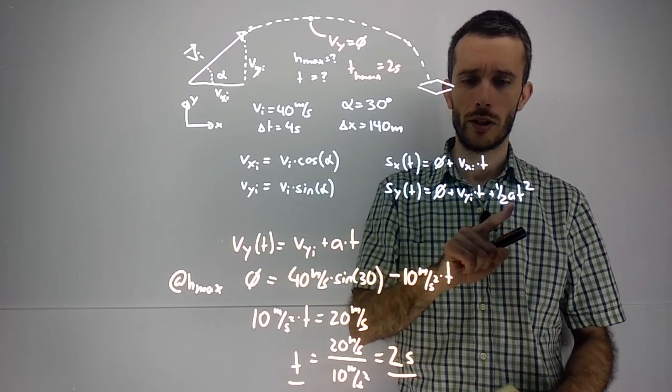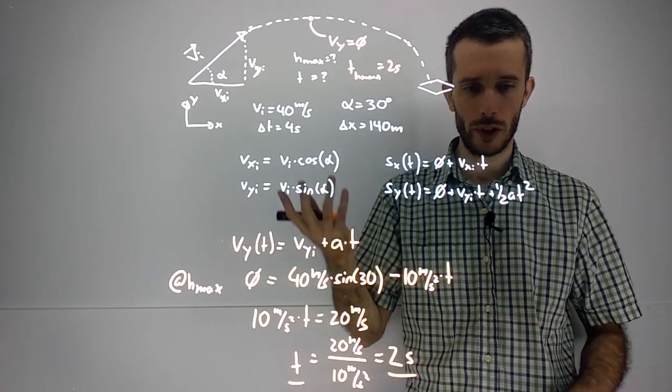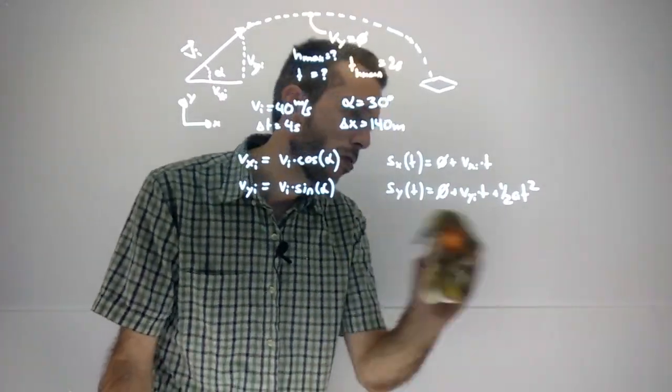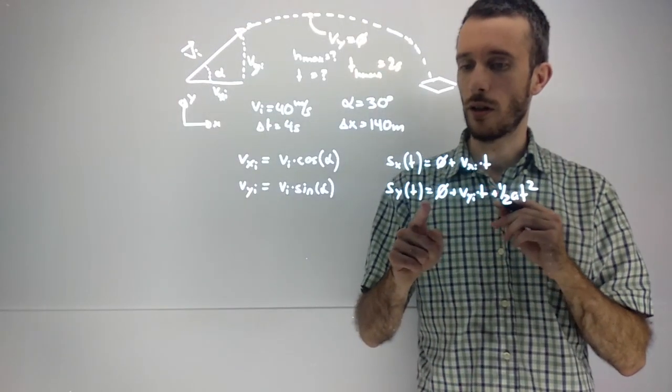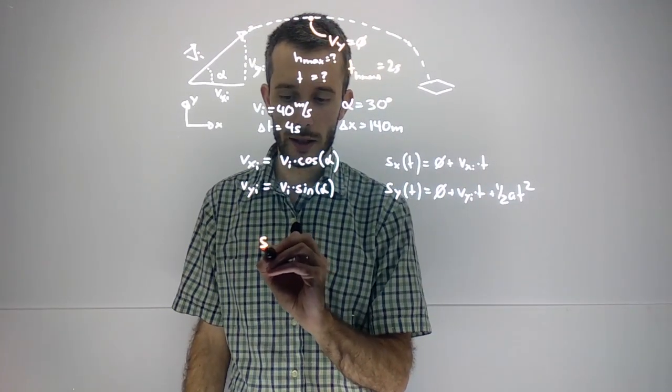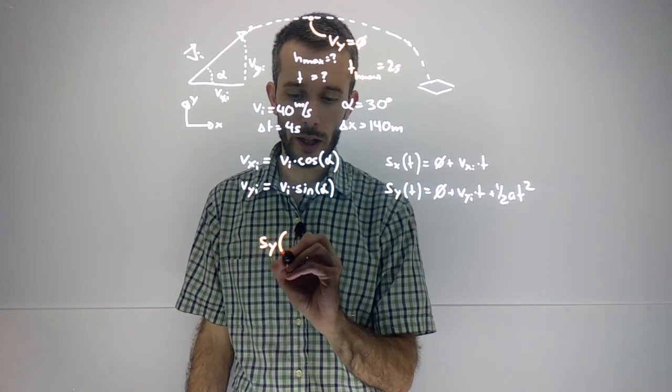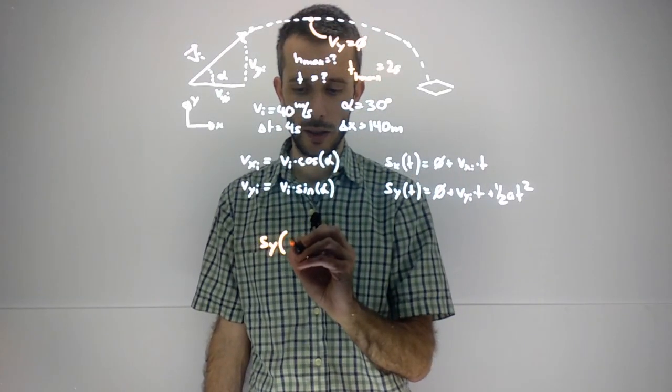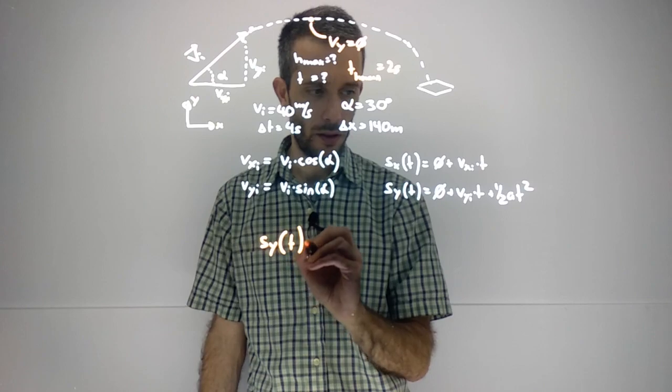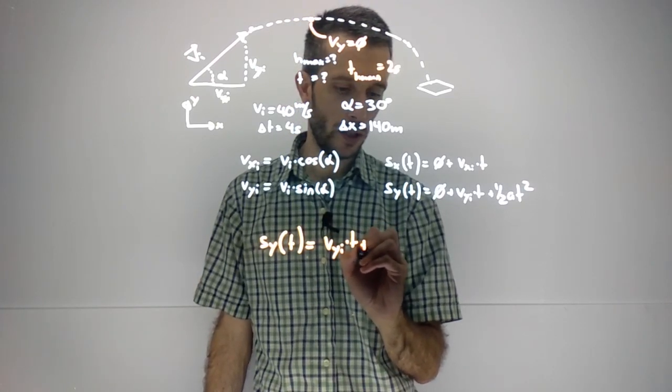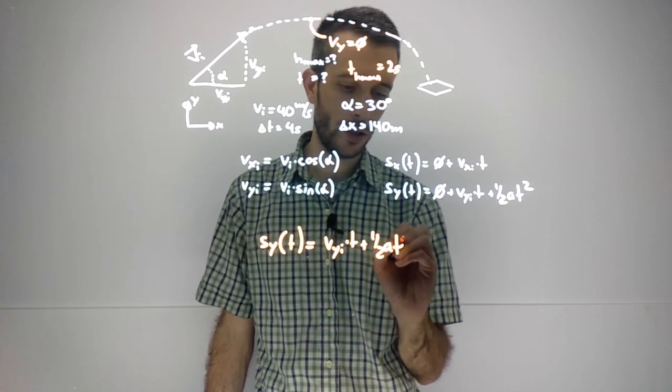For that we are going to use this equation, where we simply plug in the time that we just figured out. So displacement in y direction as a function of time, in this case at 2 seconds, is vy initial times t plus one half a t squared.